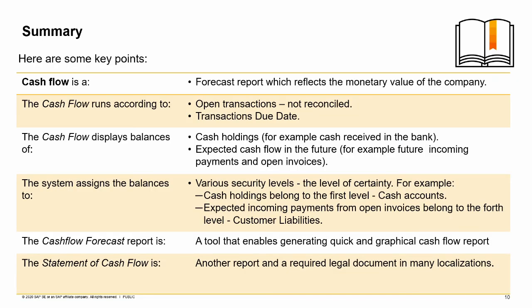Here are some key points to take away. Cash flow is a forecast report which reflects the monetary value of the company. The cash flow runs based on open transactions, not reconciled, and the transaction's due dates. The cash flow report displays balances of cash holdings, such as cash in the bank, and expected cash flow in the future, such as future incoming payments and open invoices. The system assigns the balances to various security levels based on the level of certainty.